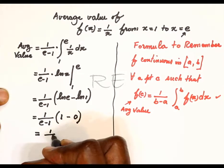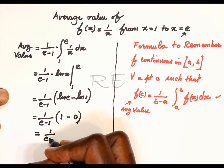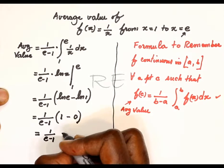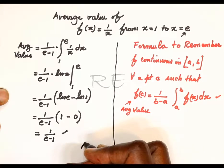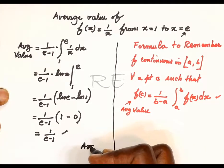So it's 1 over e minus 1 times 1. The correct answer is 1 over e minus 1. This is answer E.